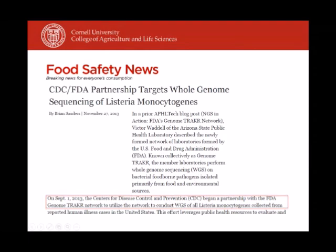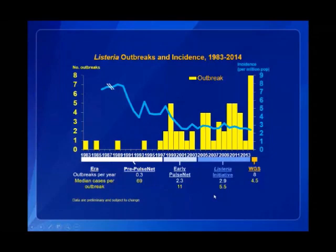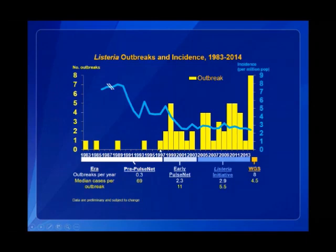The impact of these tools has been tremendous. Yellow bars indicate human listeriosis outbreaks in the US. Before routine fingerprinting we saw one outbreak every three years — in 1983, 1985, 1989, 1994 — with an average size of 70 cases. Starting in 1997, when routine DNA fingerprinting with banding patterns began, we see outbreaks detected every year, anywhere from one to five. That is a considerable increase from the pre-1997 era.